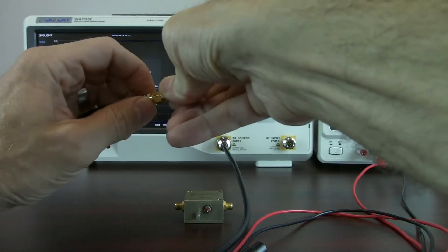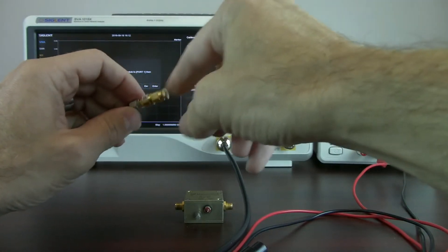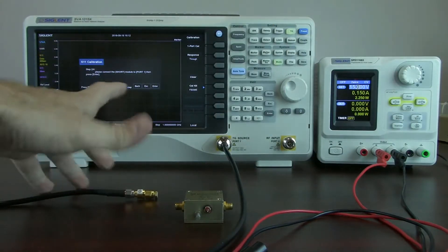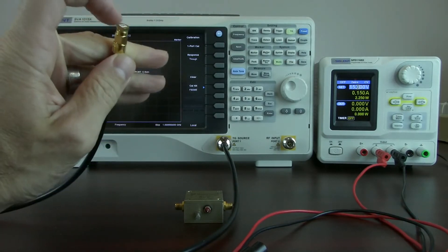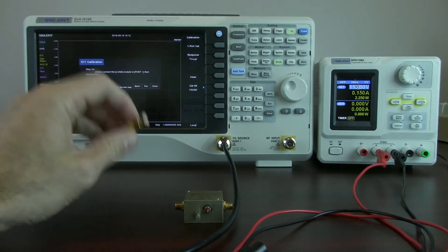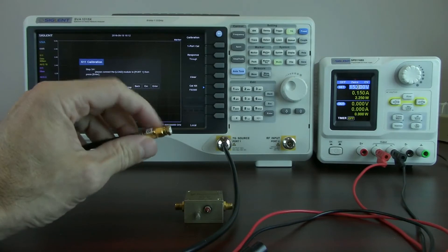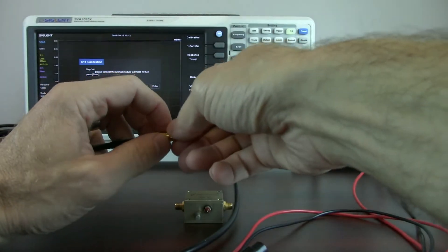This calibration process is going to remove the effects of the attenuator and the cabling, or at least minimize them. In this particular case, we don't have a fully characterized set of shorts and loads, so it is going to have some error, but it is going to be better than if we were to not perform that calibration.